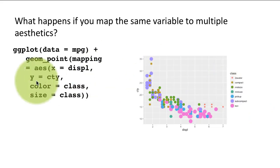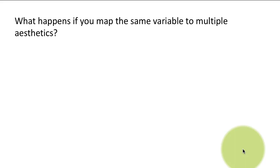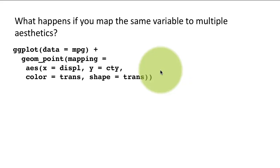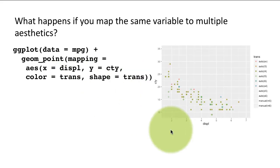Otherwise, generally, if the different aesthetics were mapped to different variables, then it would show multiple variables within the legend. If you map the same variable to multiple aesthetics just like before, color and shape. Trans is the kind of transmission that is being used. So again, you see that it works. But once again, because of the fact that we went to shape, more than six was not allowed.